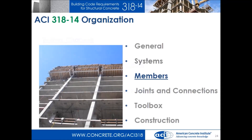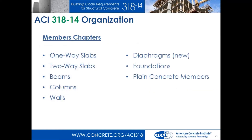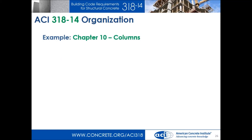Once we have our structural system, put on loads, and run analysis, we design our members. The member chapters include walls, foundations, slabs, beams, and columns, with a new chapter added for diaphragms — which is part of slabs but has enough unique information to warrant its own chapter. The neat thing about the member chapters is that they're all organized the exact same way, with seven sections labeled consistently so you find like information in each section.